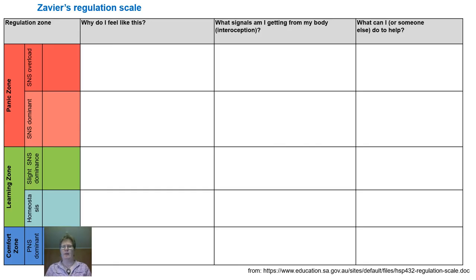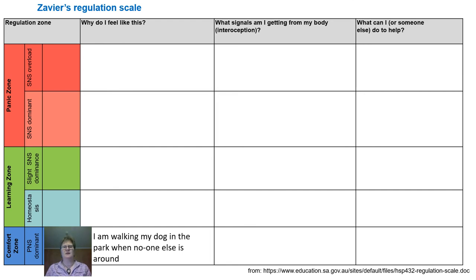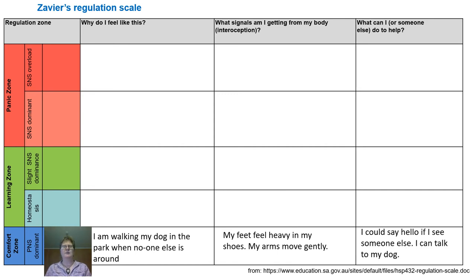This is Xavier's regulation scale. Xavier really enjoys walking his dog in the park when no one else is around — though it's not a full-on 'wow, this is amazing,' it's his calm, happy space. This is his parasympathetic dominant, his comfort zone. The way he knows he's in this is that his feet feel heavy in his shoes and his arms move gently. Xavier is not particularly interested in other people, and his reminder for moving into the learning zone is to say hello to somebody else when walking his dog.